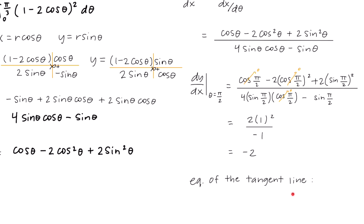To write the equation of the tangent line at the point where theta equals pi over 2, we use point-slope form: y minus y1 equals slope times (x minus x1). With the point (0, 1) and slope negative 2, we get y minus 1 equals negative 2x.